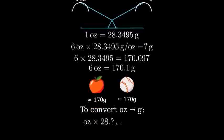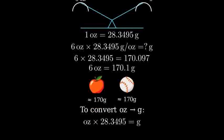So remember, to convert from ounces to grams, multiply the number of ounces by 28.3495, and you'll get the equivalent weight in grams.